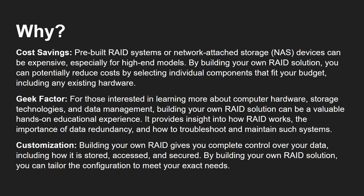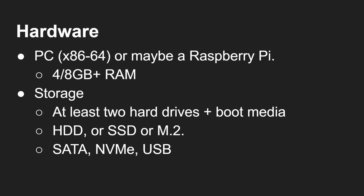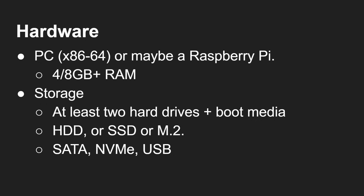In general what you're going to need is a 64-bit PC or a Raspberry Pi. Four gigs of RAM is good, eight gigs would be better. You're going to need at least two hard drives — whether traditional mechanical drives, SSDs, or M.2 slots. You'll also need boot media, because generally you don't boot from the storage drives themselves. The NAS OS is installed on a separate boot device, sometimes just a USB drive, and the extra hard drives hold your data.